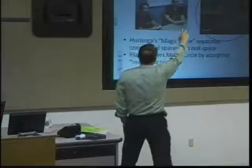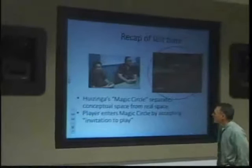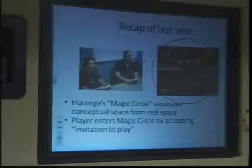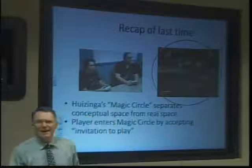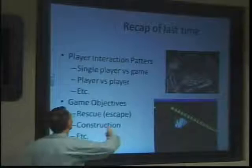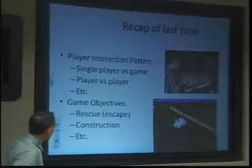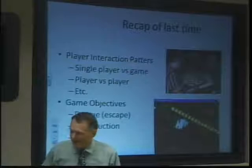Let's talk about a recap of last time. We talked about Huizinga's magic circle that separates conceptual space from real space, and that the player enters the magic circle by accepting the invitation to play. We talked about player interaction patterns, like single player versus game and player versus player. And we talked about game objectives — some examples were the rescue or escape game, the construction game, the capture and kill game.